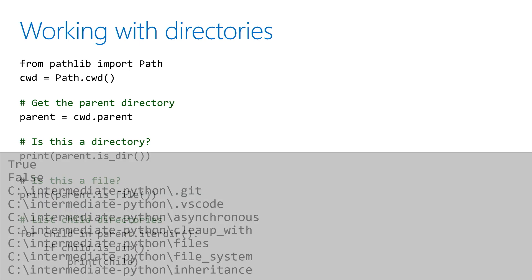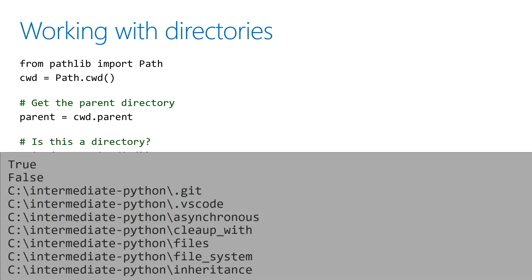If I were to run that passing in the working directory, I'd see that the working directory is a directory name — so is_dir is true, is_file is false — and the contents of the current working directory might be something like a few code examples.